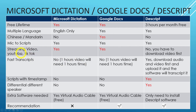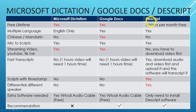For streaming video — that means you're watching a YouTube video and want to convert that voice to text — Microsoft Dictation and Google Docs can do that. But for Descript, you have to download the video first, so it is not converted on the spot. For fast transcript, both Microsoft Dictation and Google Docs require real-time processing, so a one-hour video will need one hour to transcribe. Descript lets you upload the file and the software does the work for you. For script with timestamp, only Descript supports that — important if you do a lot of video editing.